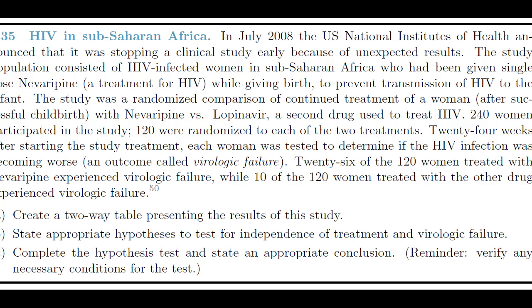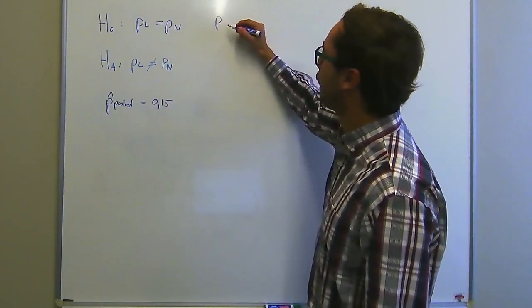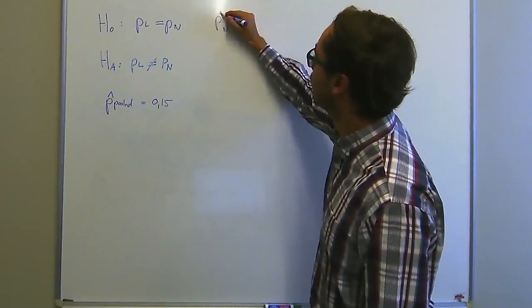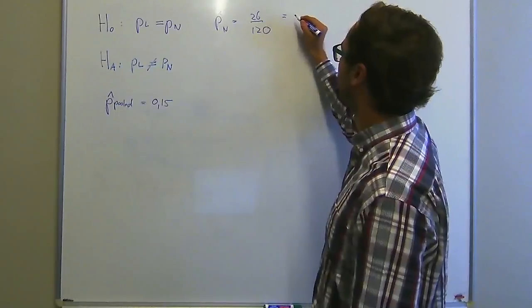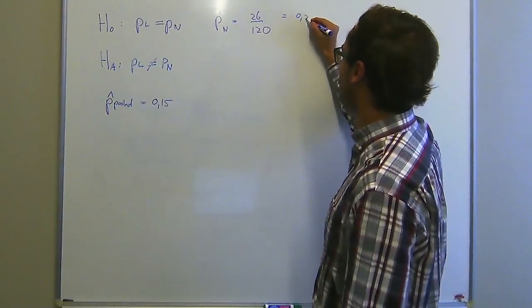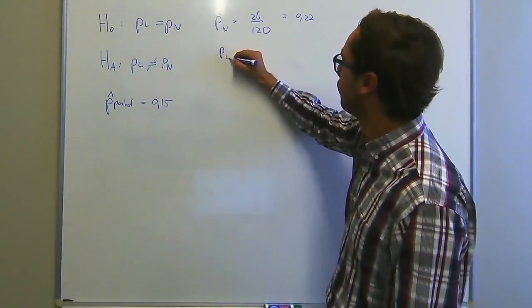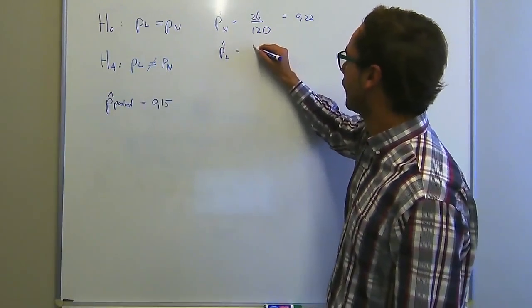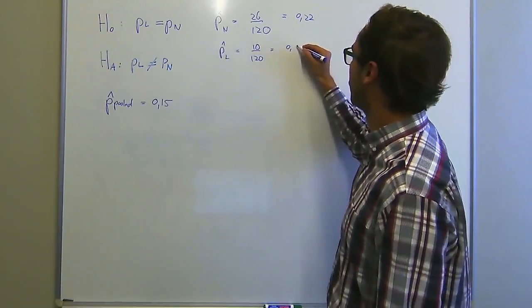The last part says: complete the hypothesis test and state an appropriate conclusion — and verify any necessary conditions. We start by finding the proportion of women who took Nevirapine: P_N = 26 / 120 = 0.22. We then find the proportion of women who took Lopinavir: P_L = 10 / 120 = 0.08.